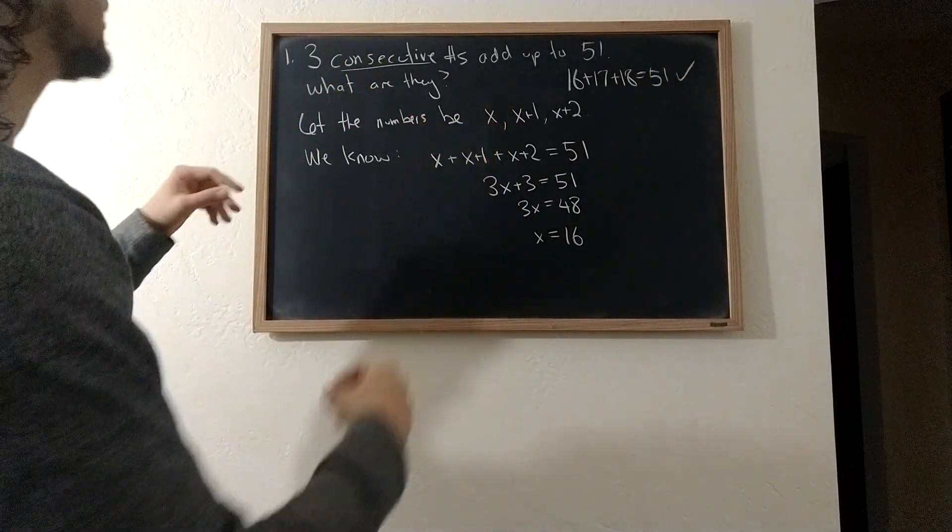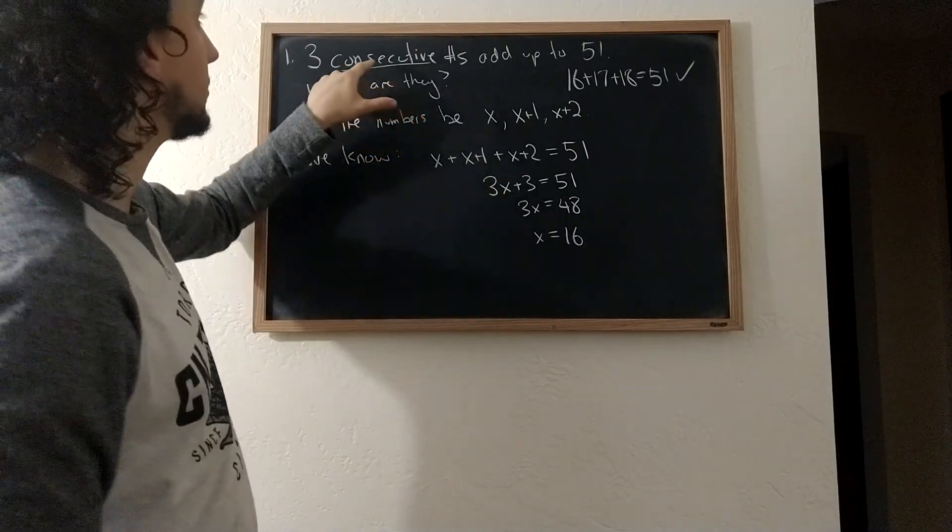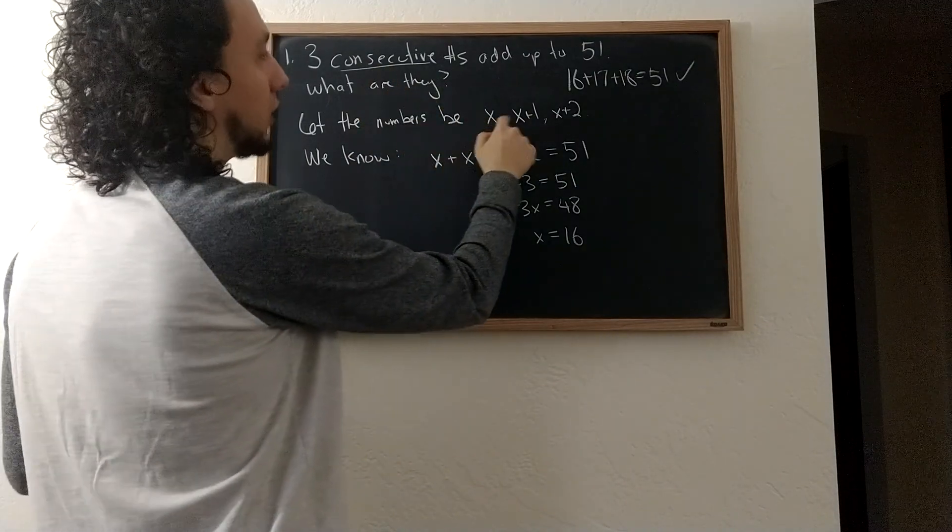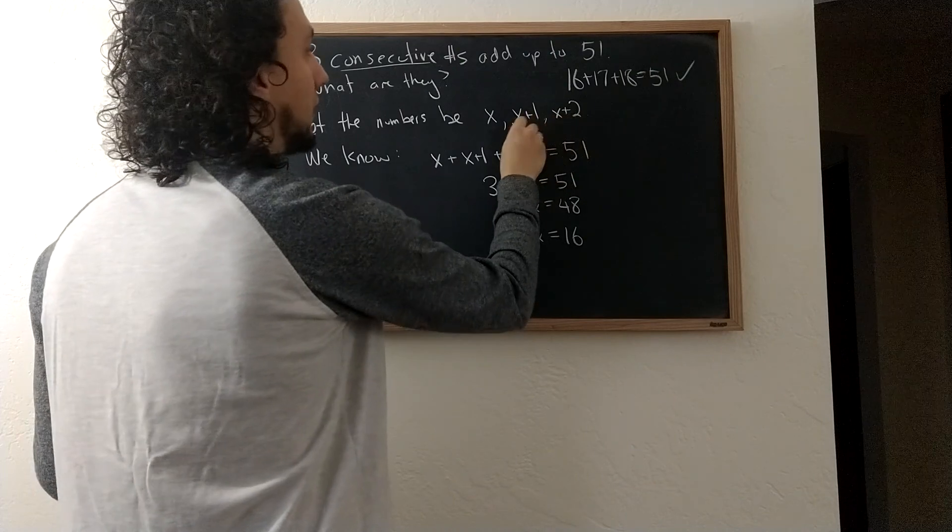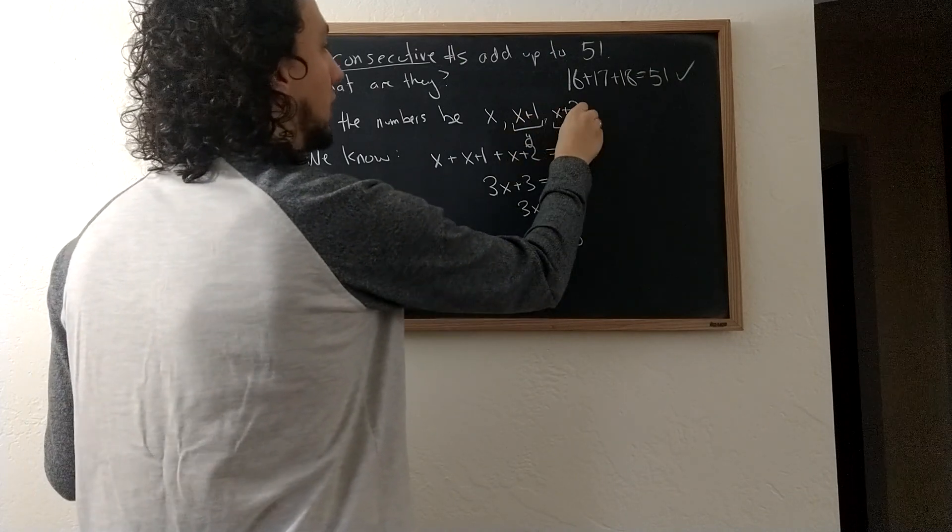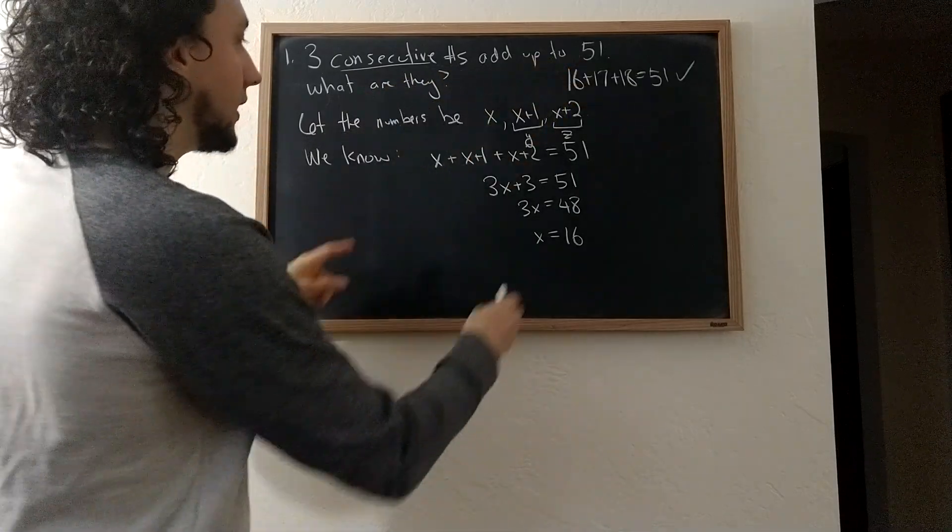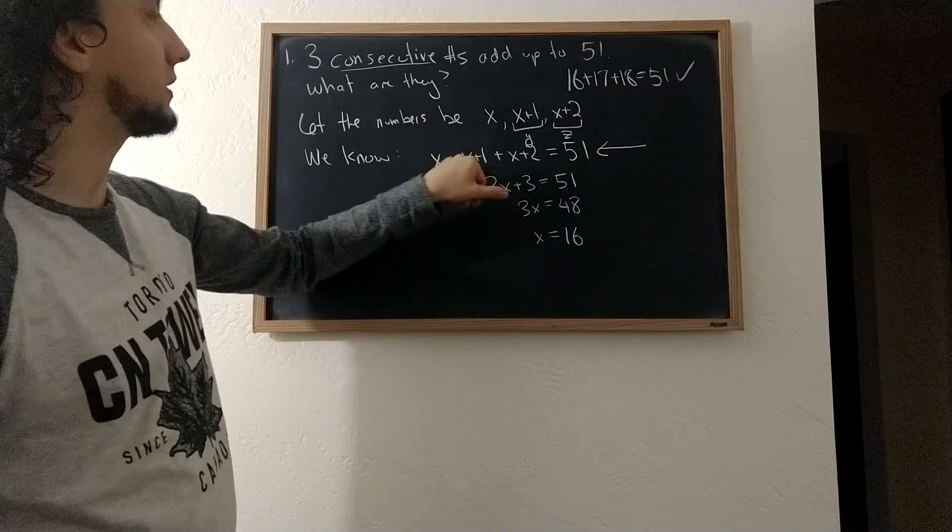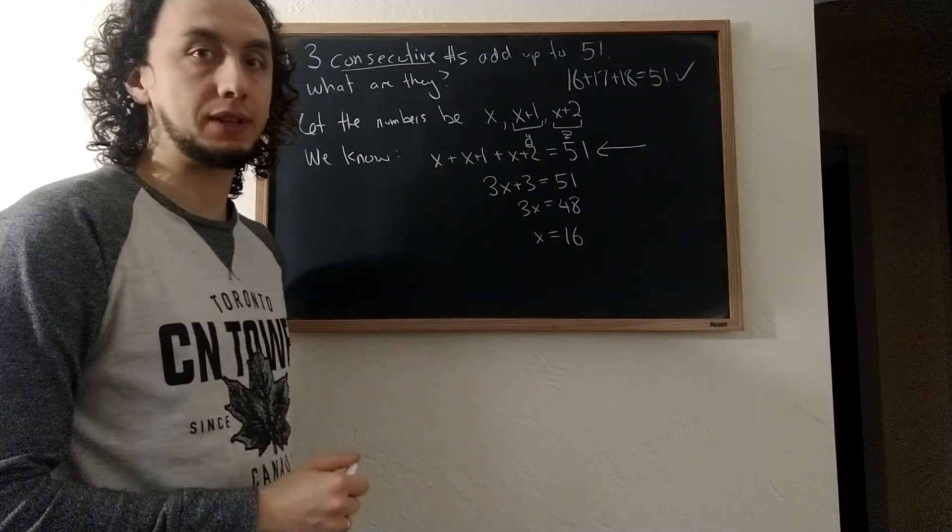So that's one example, another example of using an equation to encode a constraint, namely that the numbers are consecutive. The constraint that the numbers are consecutive is encoded by the fact that I wrote this as x plus one and x plus two rather than choosing new variables y and z. And then the constraint that they add up to 51, that was this line right here where I write x plus x plus one plus x plus two equals 51, and it brings us right to the answer.